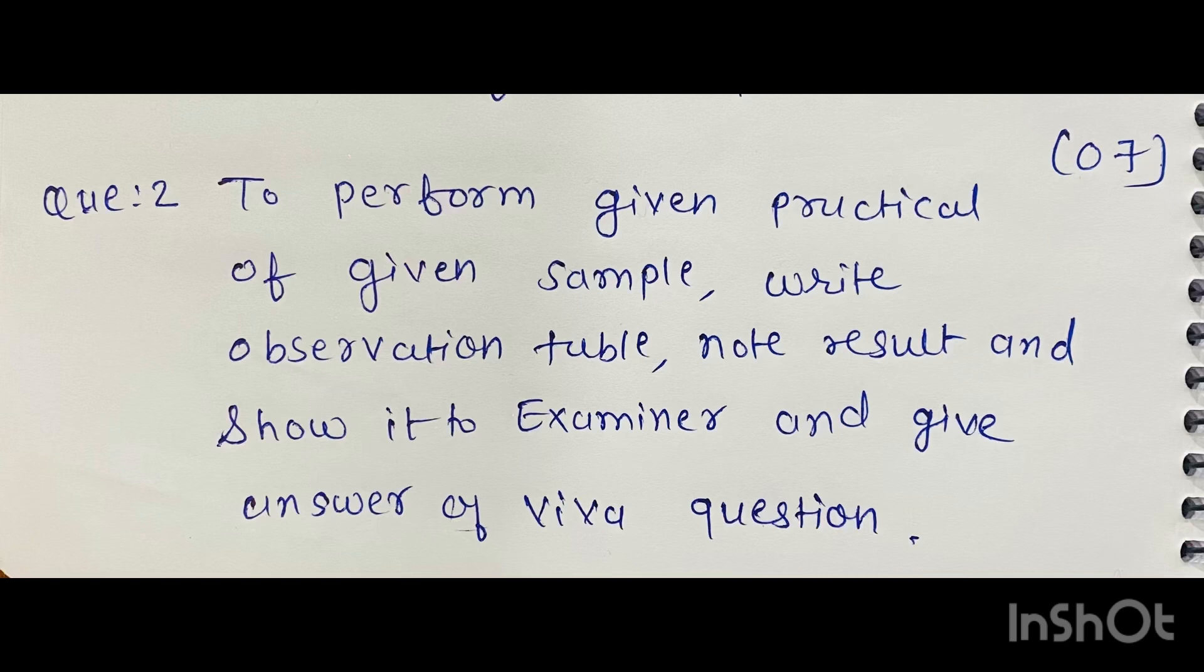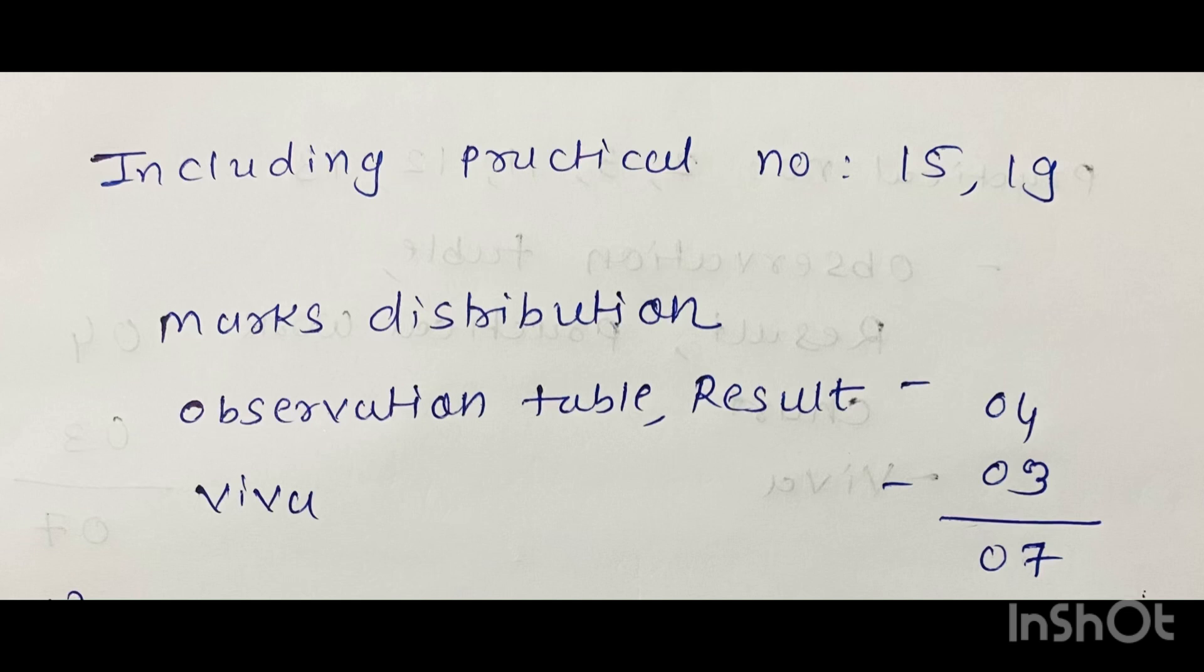Question number two carries seven marks. It has the same pattern as question number one. Practical will be asked from practical numbers 15 and 19, so it will be very easy for you to score maximum marks in this question. Marks distribution: observation table and result carries four marks, and viva carries three marks.